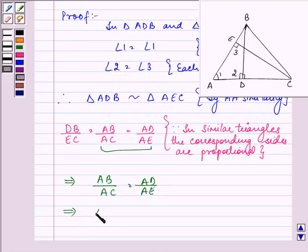On cross-multiplying, we have AB into AE equal to AC into AD. And this is what was needed to be proved in this question.